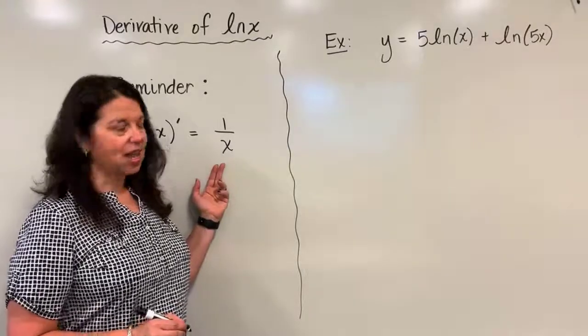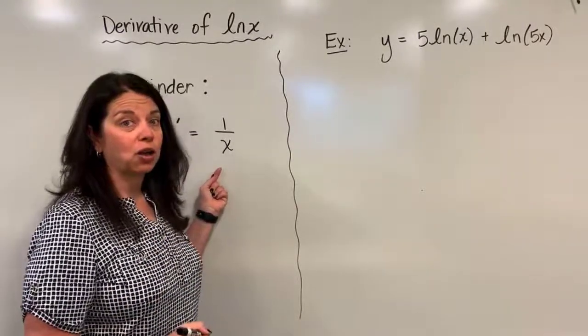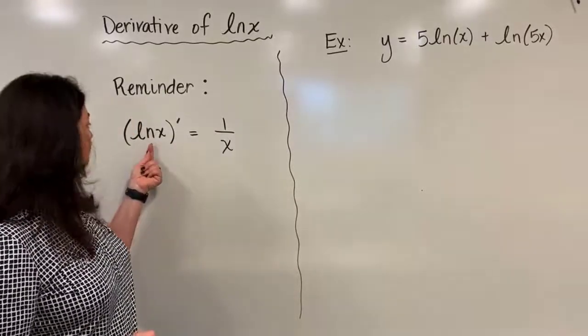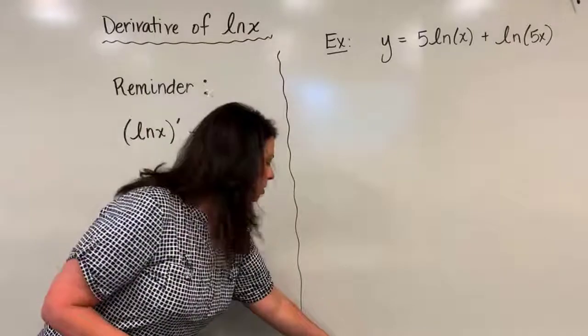In my last video we derived that rule for natural log x and its derivative, and we found that the derivative of natural log of x is in fact 1 over x.